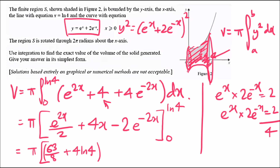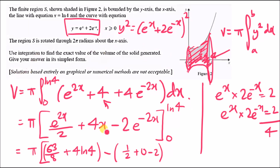Now substitute x = 0: e^0 = 1, so the first term is 1/2. The middle term gives 4(0) = 0. And −2e^0 = −2. So the lower limit gives 1/2 + 0 − 2 = −3/2. Subtracting the lower limit means minus (−3/2), which becomes +3/2.